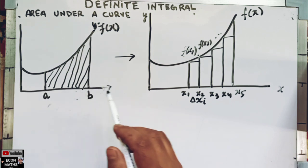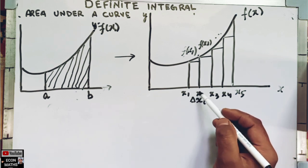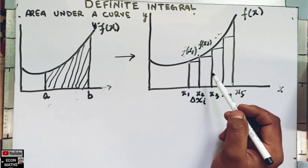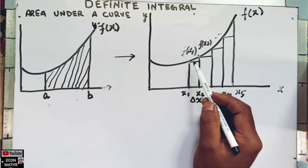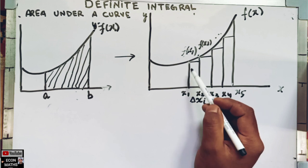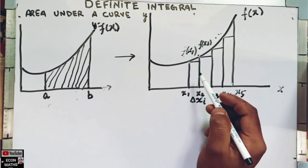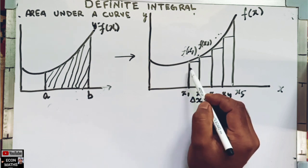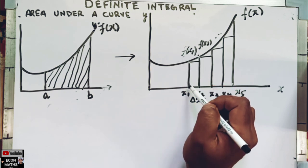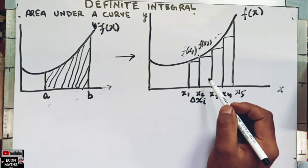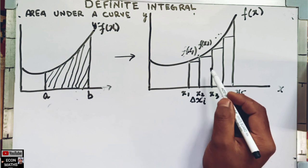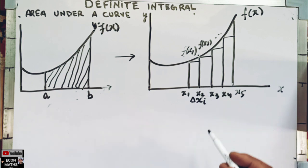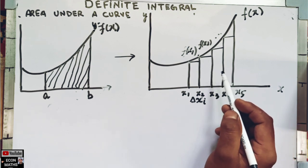We can divide the interval [a, b] into n sub-intervals: x₁x₂, x₂x₃, x₃x₄, and so on, and rectangles will be formed. The height of each sub-interval is equal to the smallest value of the function in that sub-interval. For the first interval x₁x₂, x₁ is the smaller value, so the height is f(x₁). Similarly, the height of interval x₂x₃ is f(x₂).